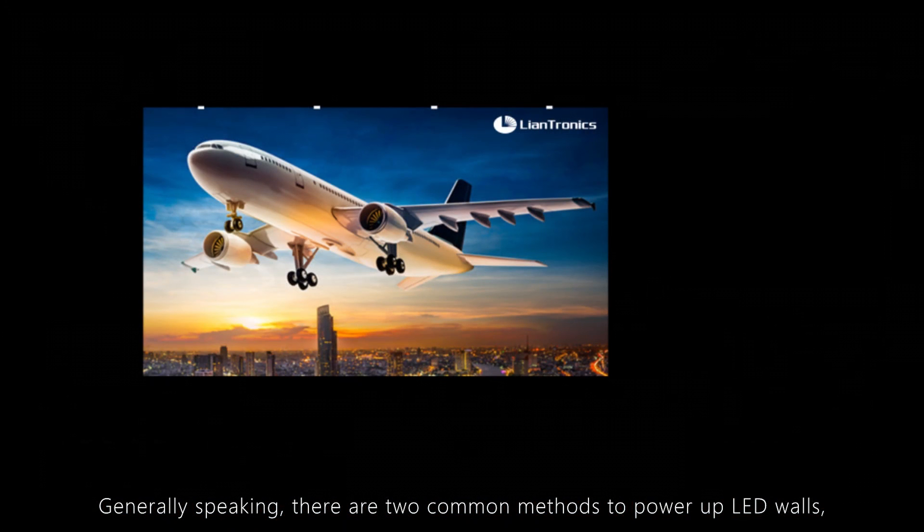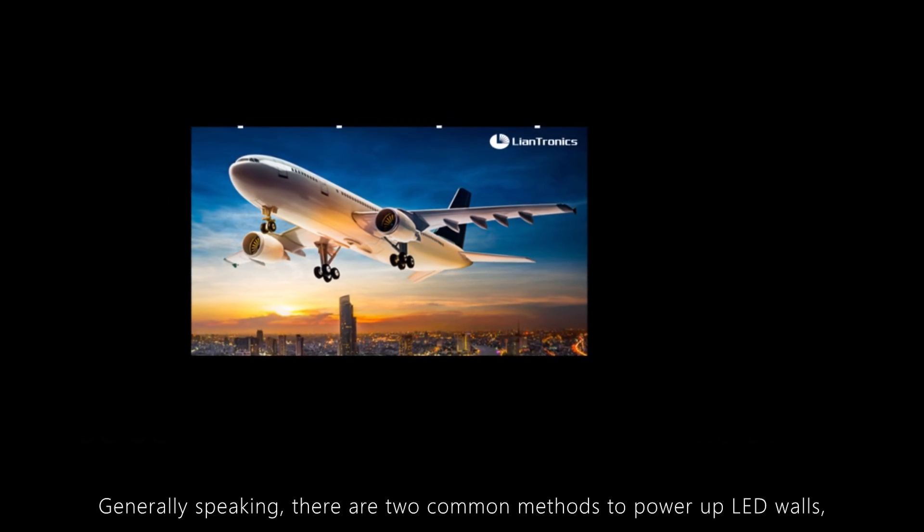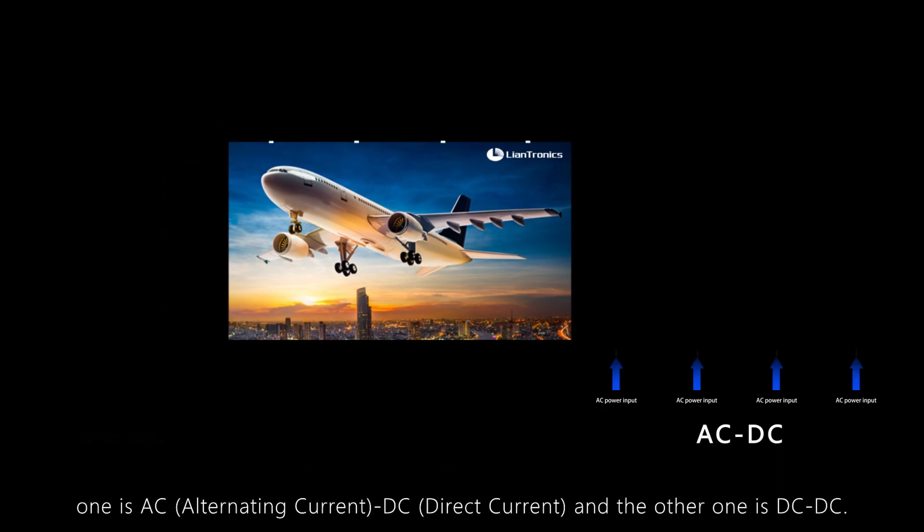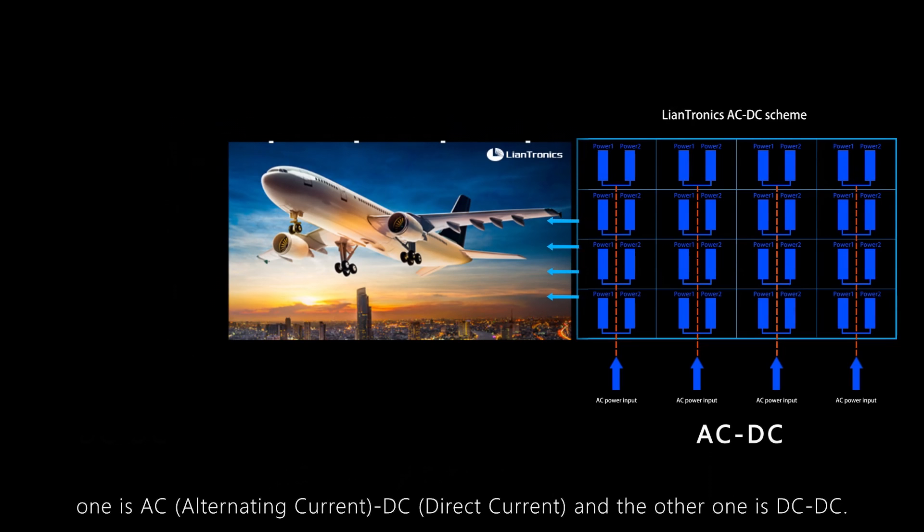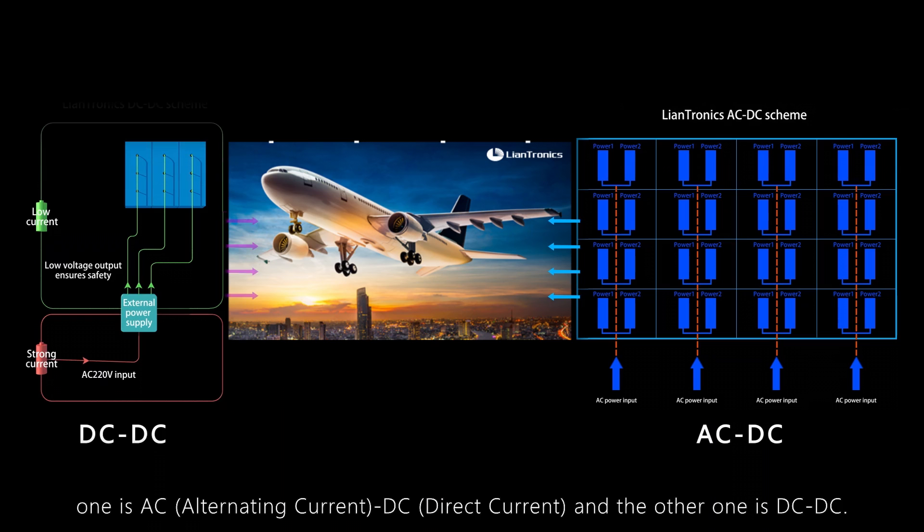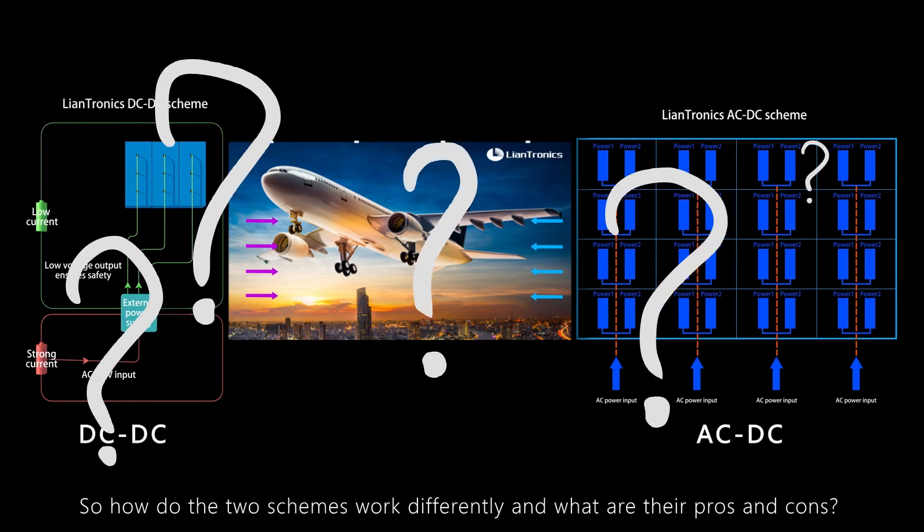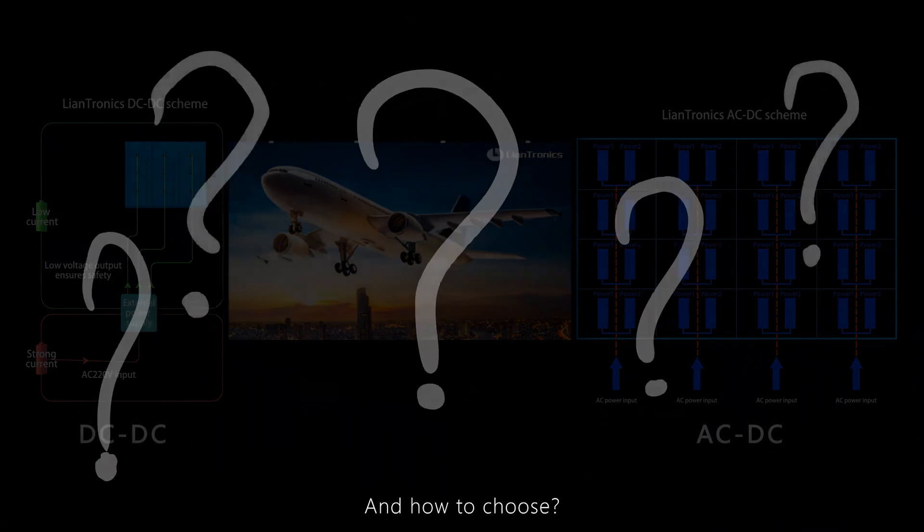Generally speaking, there are two common methods to power up LED walls. One is AC, alternating current, to DC, direct current, and the other one is DC to DC. So how do the two schemes work differently and what are their pros and cons, and how to choose?